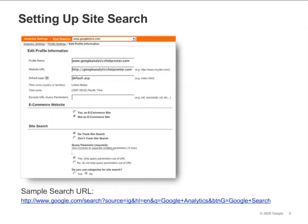In the Site Search section, select the Do Track Site Search radio button. In the Query Parameter field, enter the letter, word, or words that designate an internal query parameter.